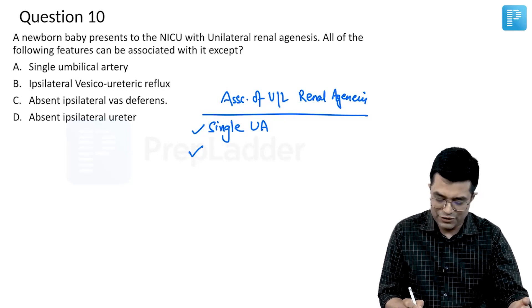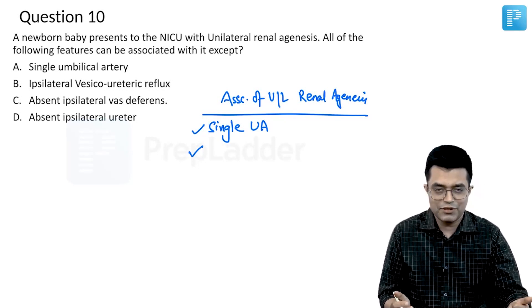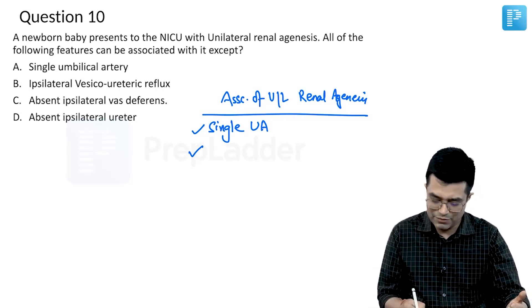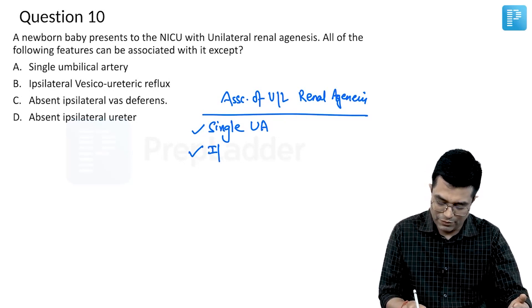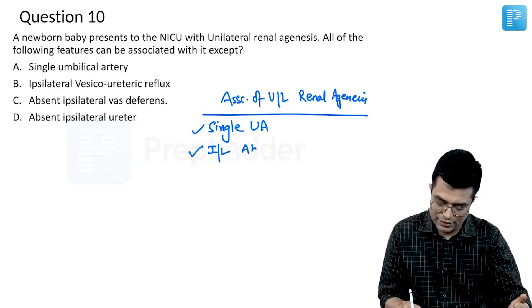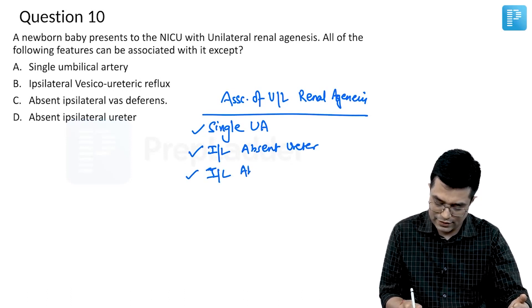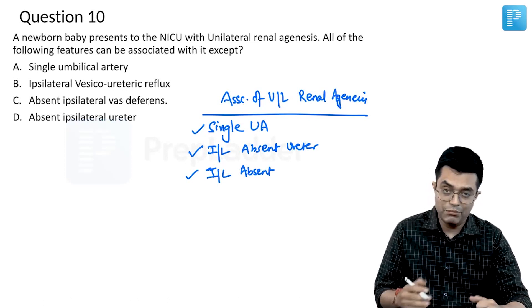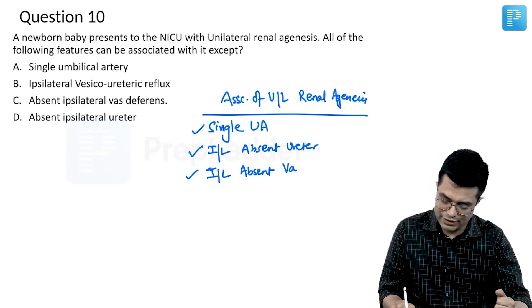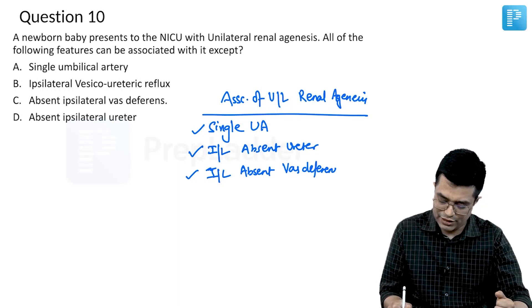The same-sided ipsilateral ureter will be absent because the kidney is also absent, so there will be ipsilateral absent ureter. In males, you will find absent vas deferens and sometimes even the epididymis.